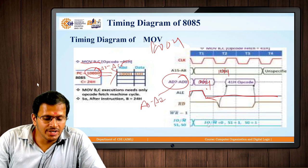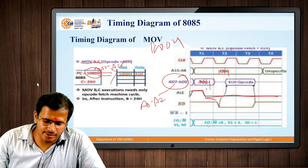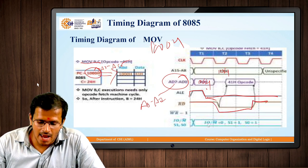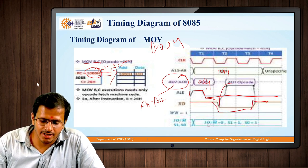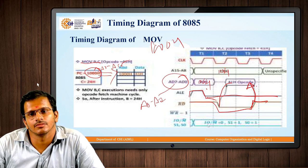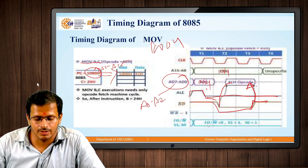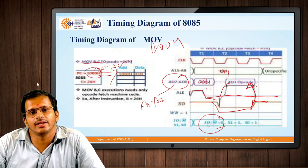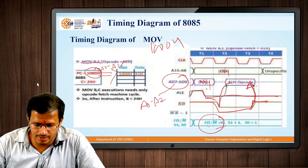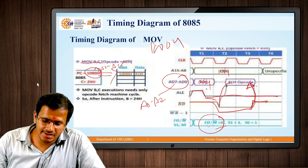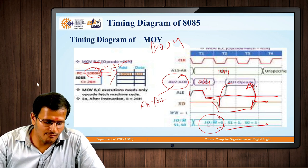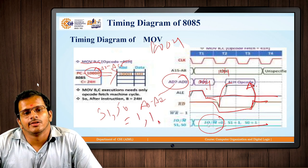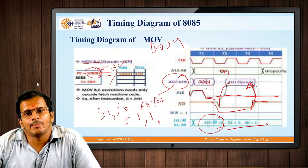We want to read content from memory to the microprocessor, so R̄D̄ becomes low. The opcode is read into D0 to D7. During this operation, IO/M̄ is 0 because it is a memory-related operation. Since it is the opcode fetching process, the value of S1 and S0 becomes 1 and 1.